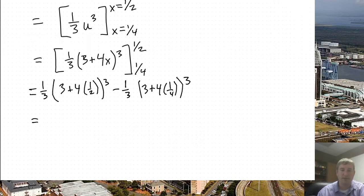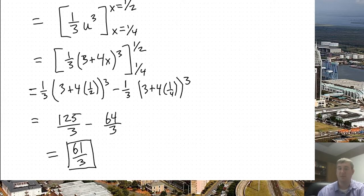And then it's just a little bit of algebra. 3 plus 4 times 1/2, that would be 3 plus 2 is 5. 5 cubed is 125 over 3. And we'll do the arithmetic over here. 3 plus 4 times 1/4 is 1. So 4 cubed would be 64 divided by 3. And then finally we'll subtract. I'm seeing 61/3. And that does not simplify. So 61/3 is my final answer.